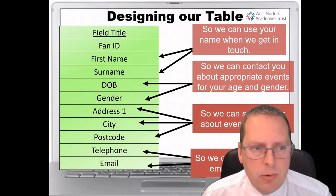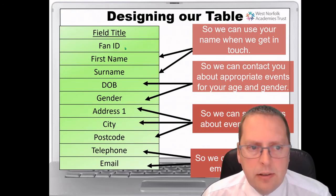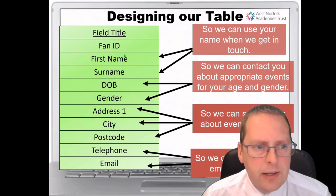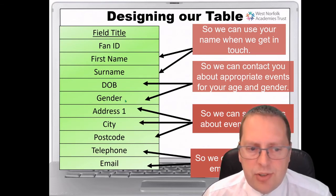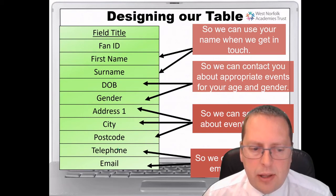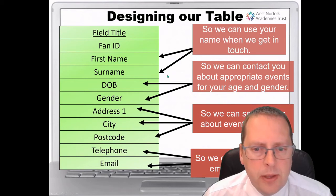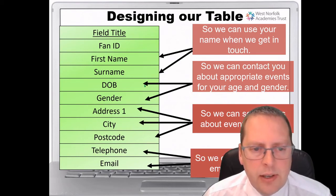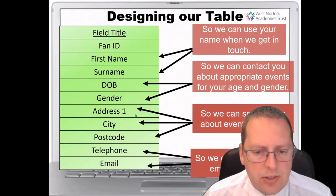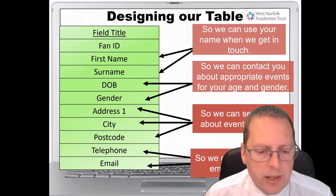The type of things you've probably come up with: you might need a fan ID — the unique number of each fan — their first name, surname, date of birth, gender, address, and contact details such as telephone and email. They need to know who the person is, information about the person such as date of birth and gender, and then contact information for sending letters, texts, or emails.